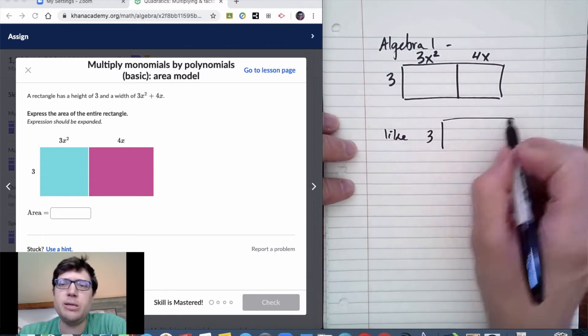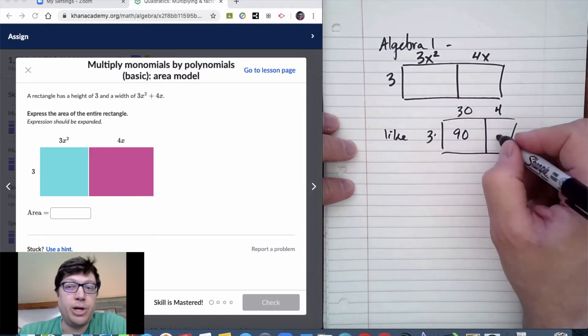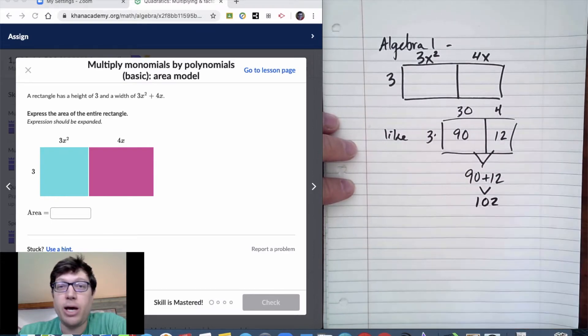You've done this similarly, although it might not have looked exactly the same. We need math like 34 times 3. 30 times 3 makes 90, 4 times 3 makes 12, and you add the results together.